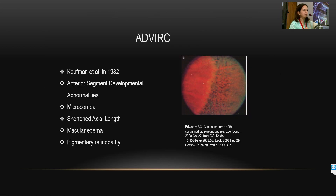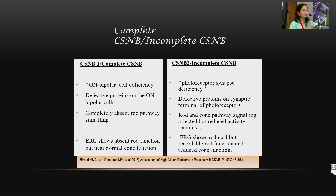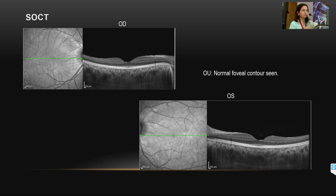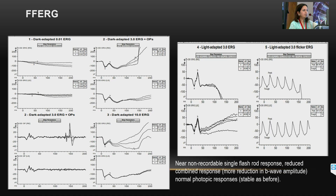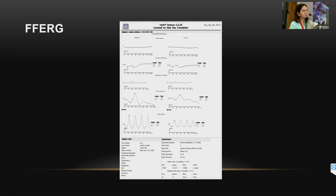ADVIRC is a rare form where there can be markedly reduced rod and cone responses even with a BEST1 mutation. In congenital stationary night blindness: near-normal fundus, typical normal OCT, beautiful negative waveform with only an a-wave and no b-wave, scotopic otherwise normal. With a tapetal reflex and negative waveform, this is Oguchi disease.